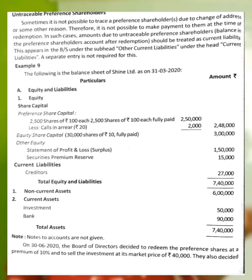The balance sheet is as of 31st March 2020. Under Equities and Liabilities: Preference share capital — 2,500 shares of Rs.10 each, fully paid, that is Rs.3 lakh. Less calls in arrears — calls in arrears means the arrears of the second call, first call, or final call — say 20 rupees. The total amount of preference share capital is Rs.2,48,000.